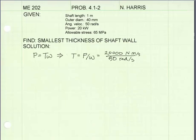The power is 20 kilowatts or 20,000 watts, which is also 20,000 newton meters per second, divided by angular velocity, which is 50 radians per second. We get a torque equal to 400 newton meters.